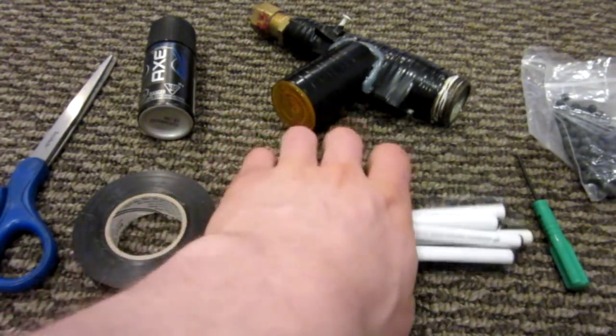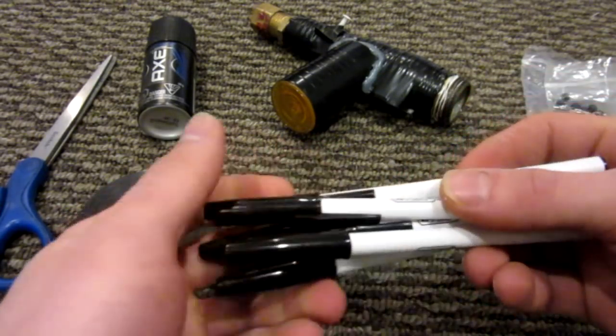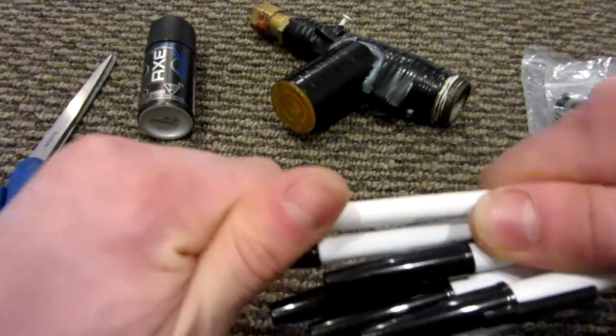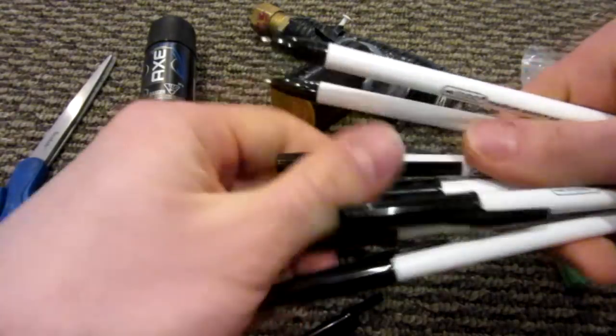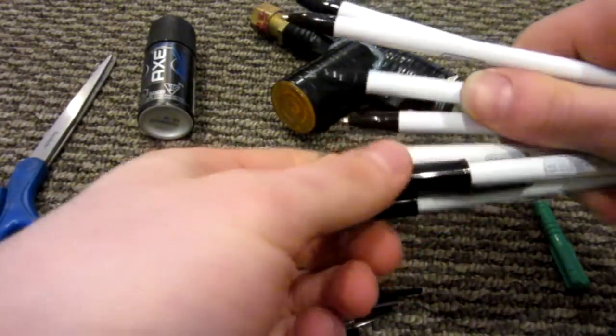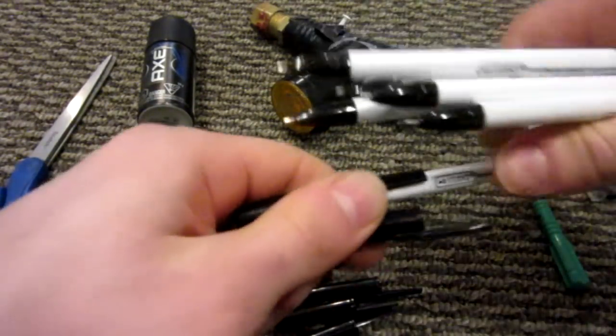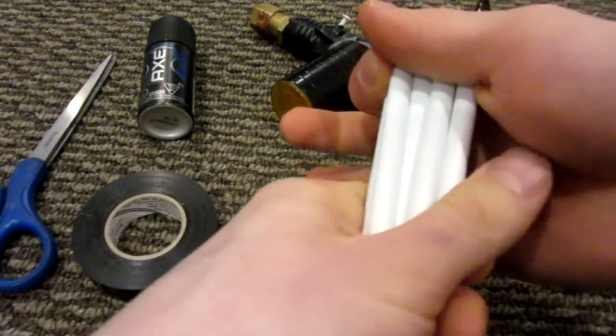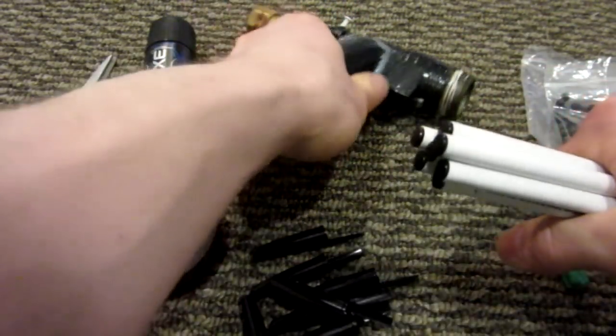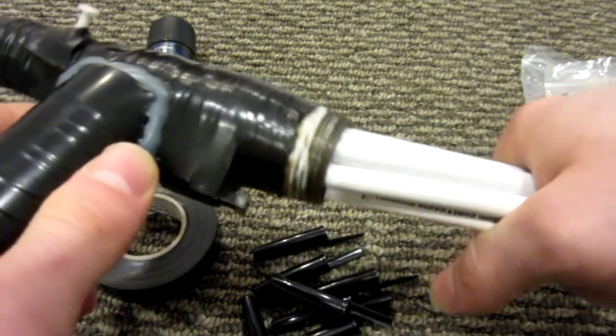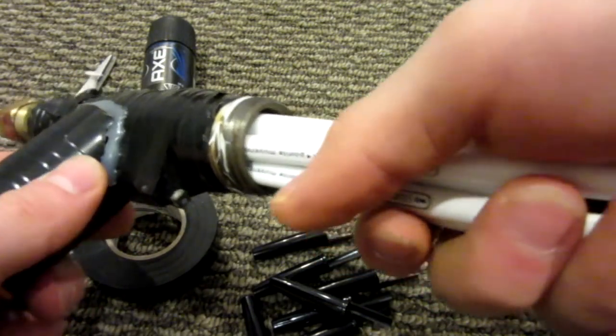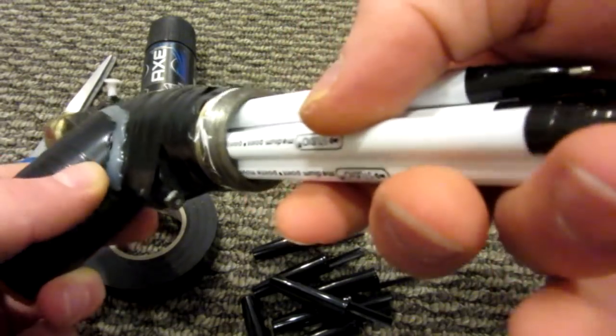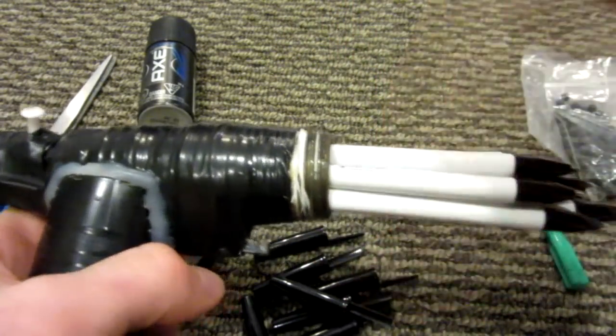Now, to make the barrels, first you have to decide how many barrels you want. To do that, you've got to take the lids off the pens so the pens are perfectly straight. Just like that. And then by putting them all together, I determined that seven barrels was perfect for the size of my pistol. As you can see, it fits in there with a little bit of wiggle space. But that's okay because we'll fix that later.